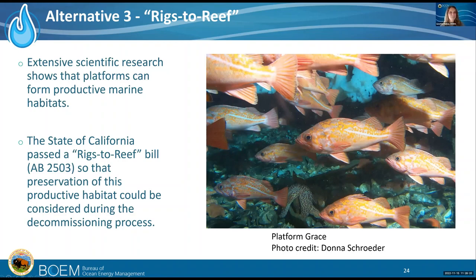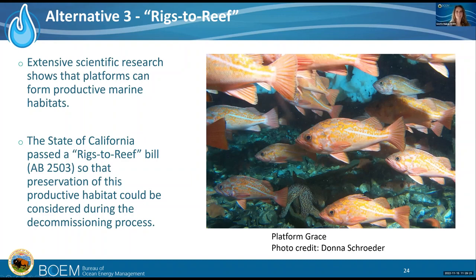For the rigs to reef option, extensive research — much of it funded by BOEM — has demonstrated the most productive habitat in the world may be underwater portions of these platforms that form artificial reefs within the Southern California Bight. This research motivated the state of California to pass legislation to enable consideration of a rigs to reef option, which could preserve some of this productive habitat. Article 2 of Assembly Bill 2503 addresses partial removal of offshore oil structures. Due to public demand, both partial removal alternatives were developed to consider these options besides the default of complete removal. BOEM and BSEE are in the process of considering these alternatives.